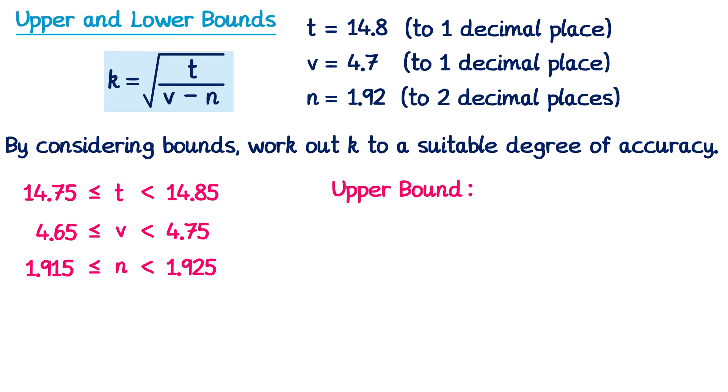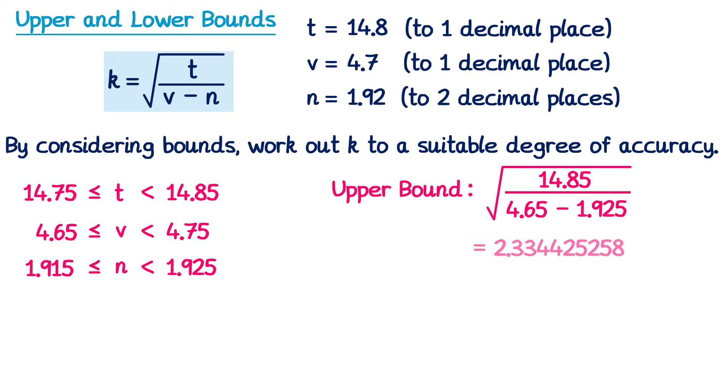For the upper bound of this division, we want the top as big as possible and the bottom as small as possible. For the top, we use the upper bound of t — 14.85. For the bottom, which is a subtraction v − n, to make a subtraction as small as possible we start with the smallest number for v — the lower bound 4.65 — and subtract as much as possible, using the upper bound of n — 1.925. So the upper bound is √(14.85 / (4.65 − 1.925)). Typing this into a calculator gives the upper bound.